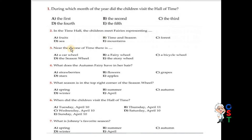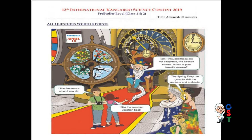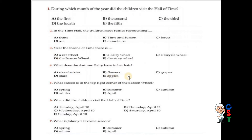Question number three: Near the throne of Time there is a seasonal wheel. The old man was sitting by the throne of time. Options include a car wheel, a fairy wheel, a bicycle wheel, the seasonal wheel, and the story wheel. We saw that it was the seasonal wheel. So question number three, D is correct. Question number four: What does the autumn fairy have in her hair? Options are strawberries, flowers, grapes, stars, and apples. Just have a look again. I think grapes. Option C is correct.